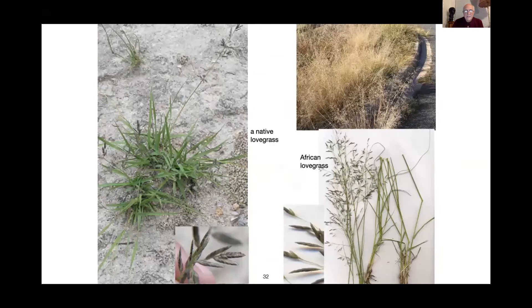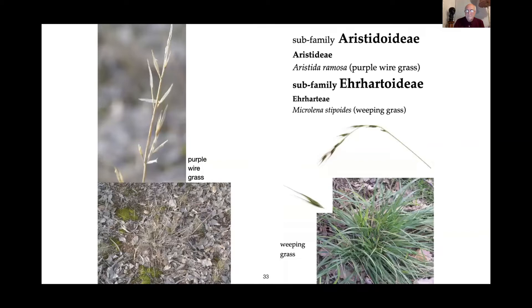Then we've got the love grasses — quite a few native love grasses, but then there's the horror of African love grass. If we had time we could talk about how to distinguish between them. And then purple wire grass — not particularly impressive, but we'll see examples like that on Sunday.